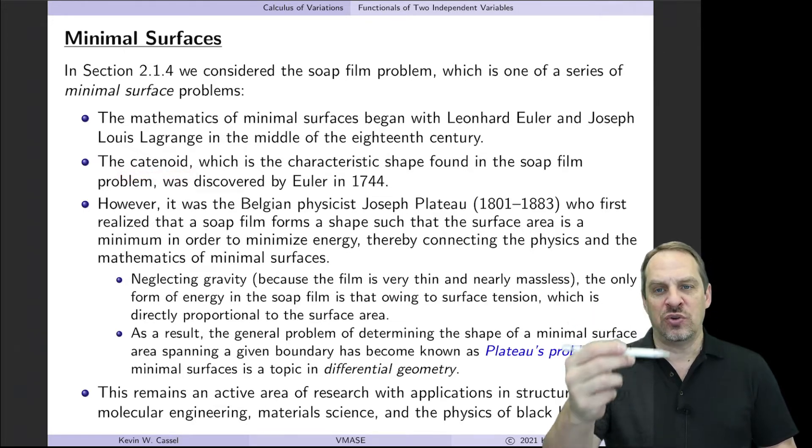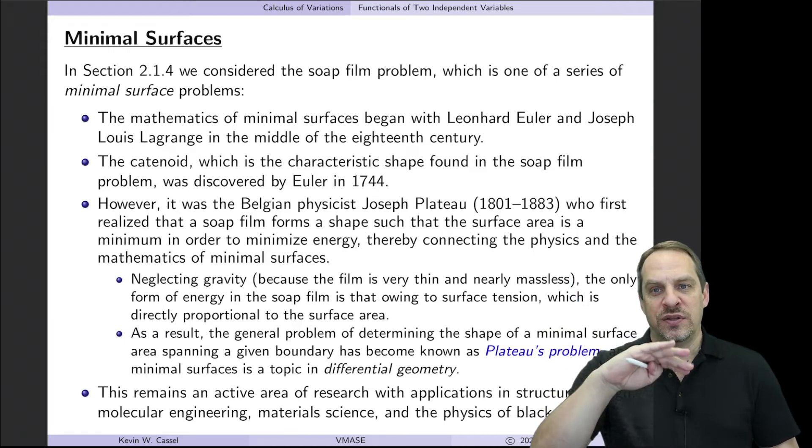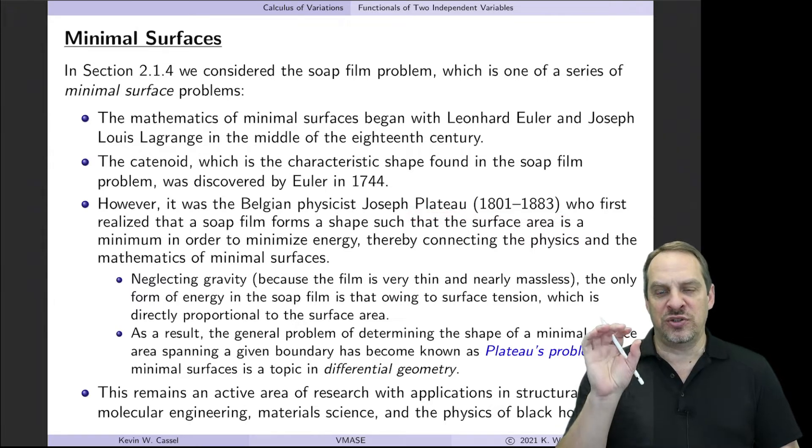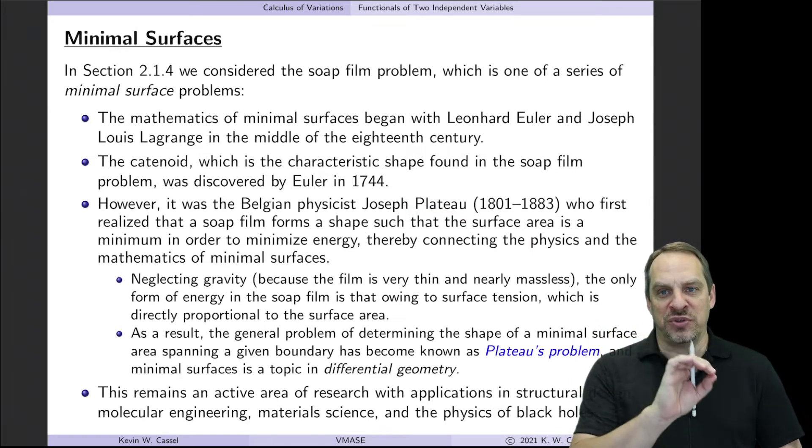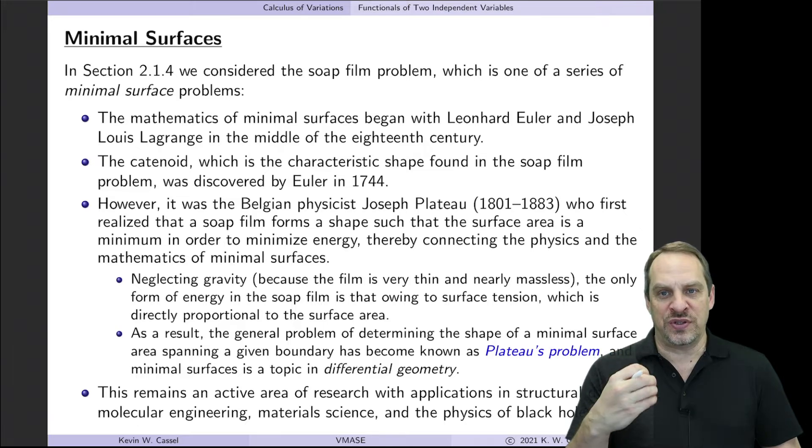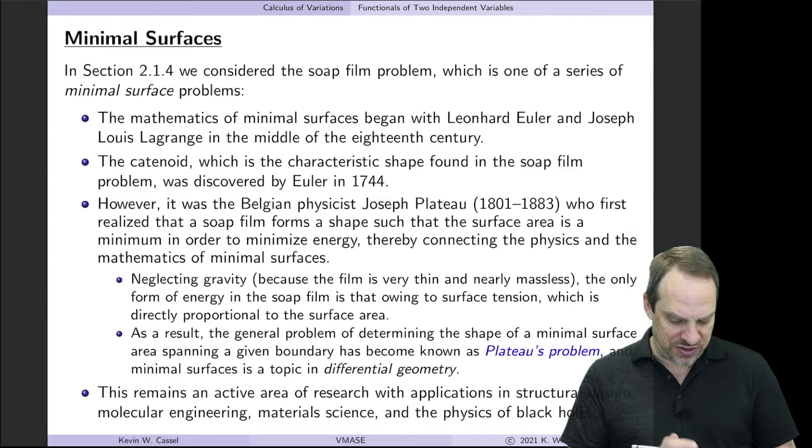The catenoid is a revolved shape of a catenary that's revolved around an axis. Then it was later in the 1800s when the physicist Plateau made the connection between the physics and mathematics of these minimal surfaces. So we're neglecting gravity so that the only energy that we're concerned with is the surface energy of the film. And that's because it's so thin it doesn't have any mass. So the only energy that we're concerned with is the surface energy,